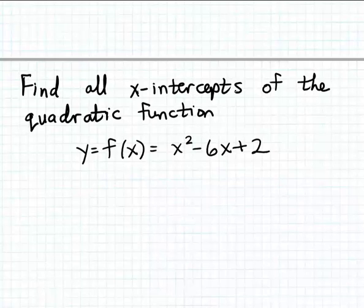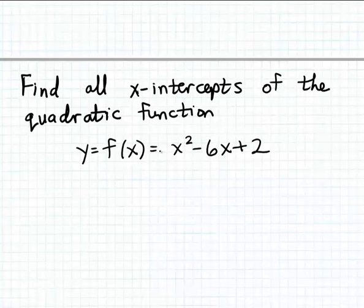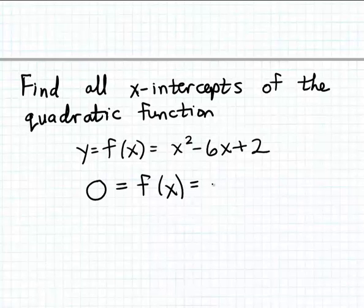In this problem, we want to find the x-intercepts of the quadratic function y = f(x) = x² - 6x + 2. To find the x-intercepts of a quadratic function — the same way as finding the x-intercepts of any function — you want to find the input that matches an output of zero. So you set the output to zero and then find the input that matches that output.